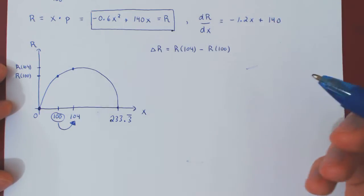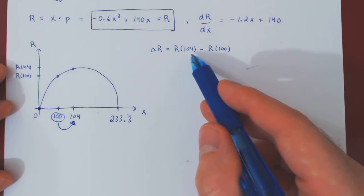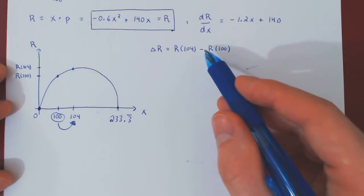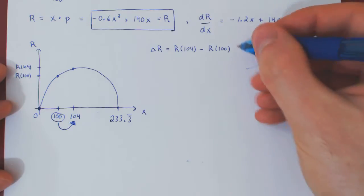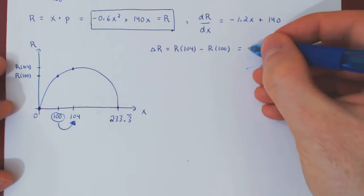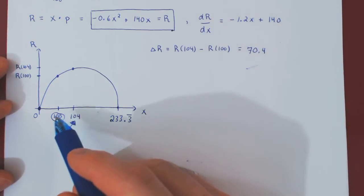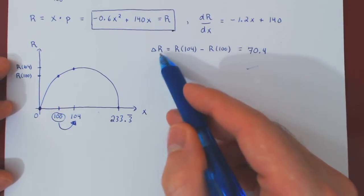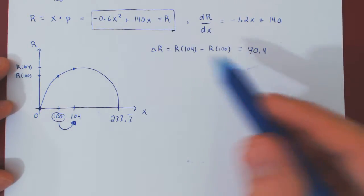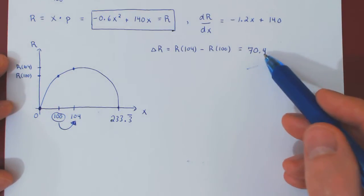It's direct substitution: plug in 104 for x to get R(104), minus the value of R when x equals 100. Working through the calculation, you will arrive at 70.4. So when the number of units sold increases from 100 to 104, the change in revenue is positive — revenue increases by exactly $70.40.